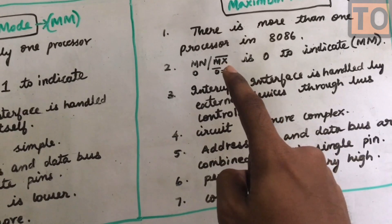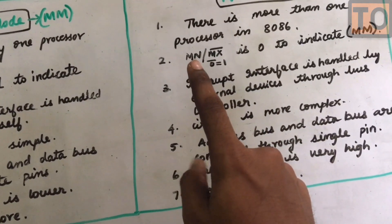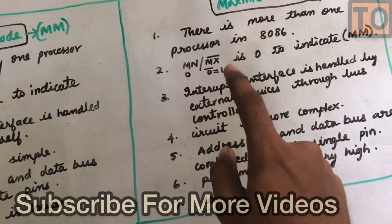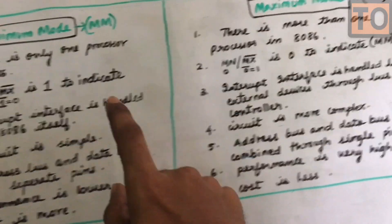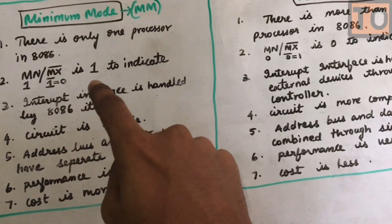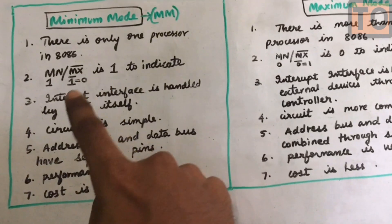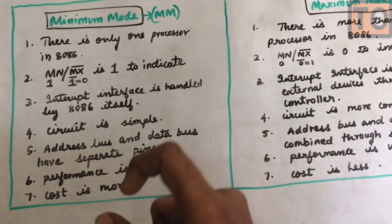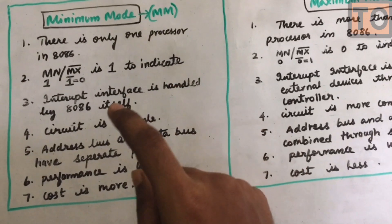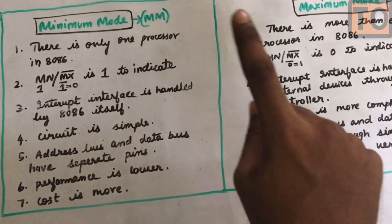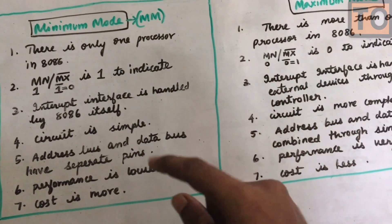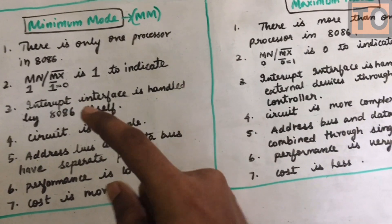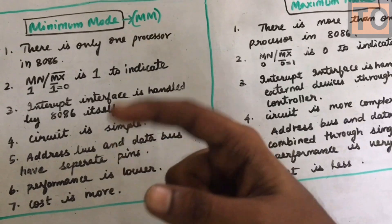Maximum mode is 1, minimum mode is 0. The interrupt interface is handled by the 8086 itself in minimum mode. The pin configuration in this video shows the interrupt handling in minimum mode.